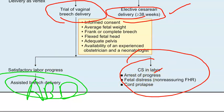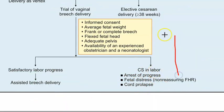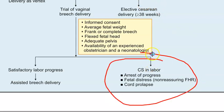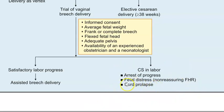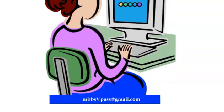It can be frustrating when you attempt vaginal delivery and end up doing a cesarean — similar to induction of labor that ends in cesarean. Indications for cesarean in labor include arrest of progress, non-reassuring fetal heart rate indicating fetal distress, or cord prolapse — if the cord is coming out first, you must proceed to cesarean section. This concludes the overview of external cephalic version and breech presentation management.